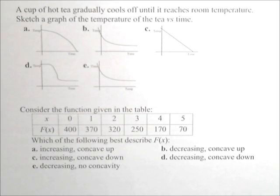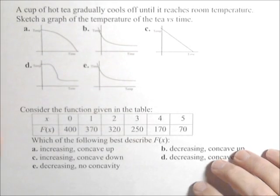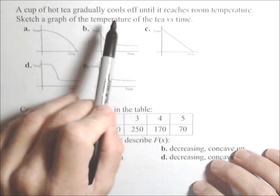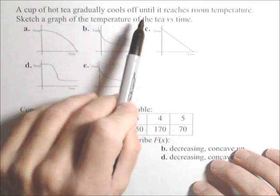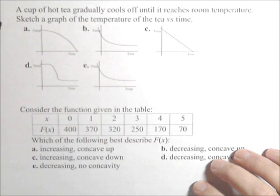In this video, we're exploring the shape of graphs. So in the first one, we have a cup of hot tea that gradually cools off until it reaches room temperature.